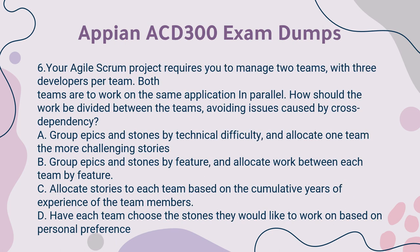Question 6: Your Agile Scrum project requires you to manage two teams, with three developers per team. Both teams are to work on the same application in parallel. How should the work be divided between the teams, avoiding issues caused by cross-dependency? A. Group epics and stories by technical difficulty, and allocate one team the more challenging stories. B. Group epics and stories by feature, and allocate work between each team by feature. C. Allocate stories to each team based on the cumulative years of experience of the team members. D. Have each team choose the stories they would like to work on based on personal preference.